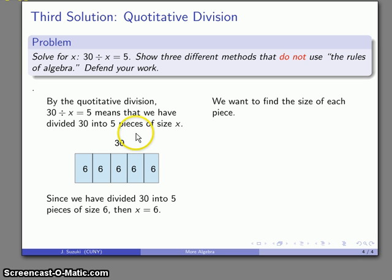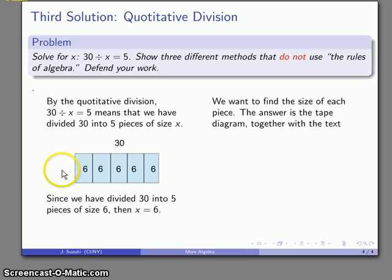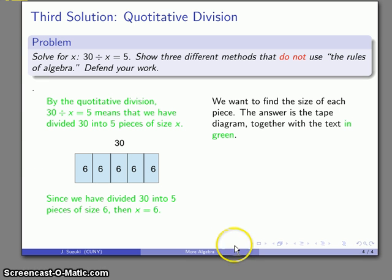All together, they're equal to 30. So that means each one of these must be of size 6. And since I've divided 30 into 5 pieces, each of size 6, then my unknown is going to be equal to 6. And again, the solution, this third solution, not using the rules of algebra, but rather using an arithmetic process, the tape diagram to show the division and the wording around it. The answer that I want to give is the portion that's highlighted in green.